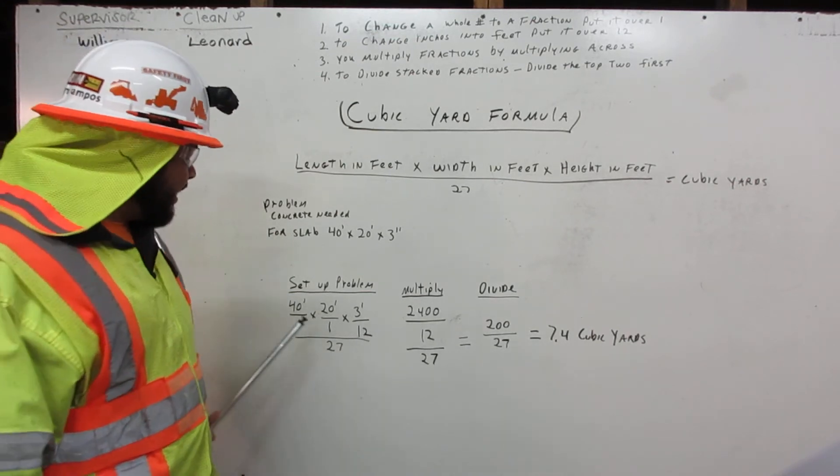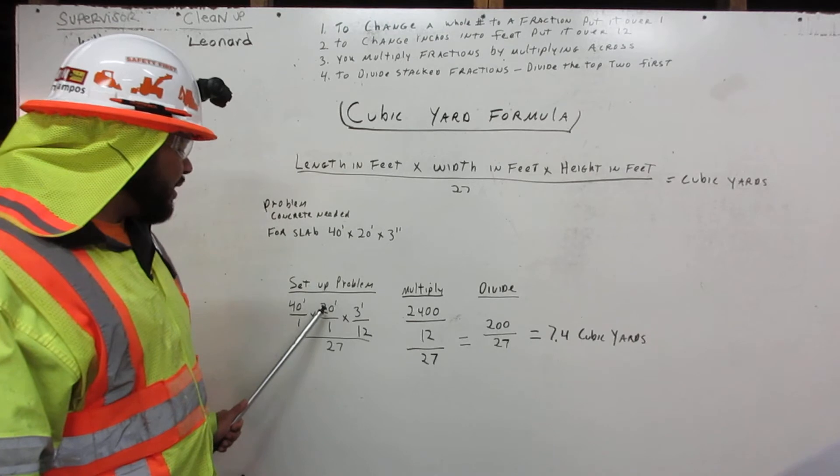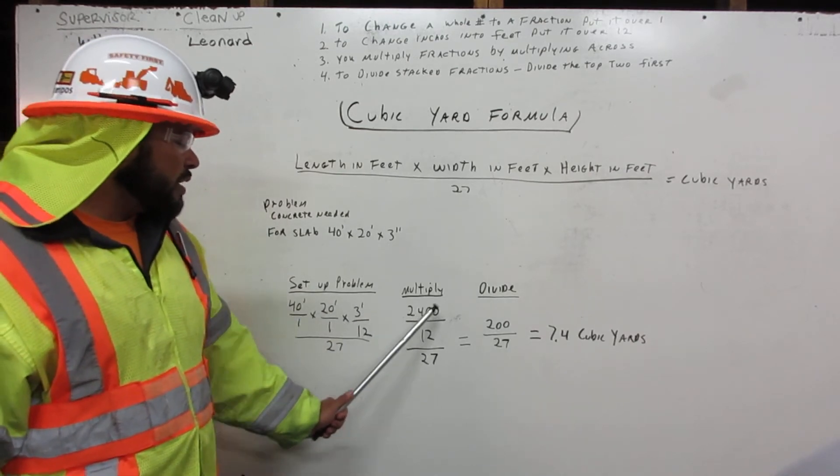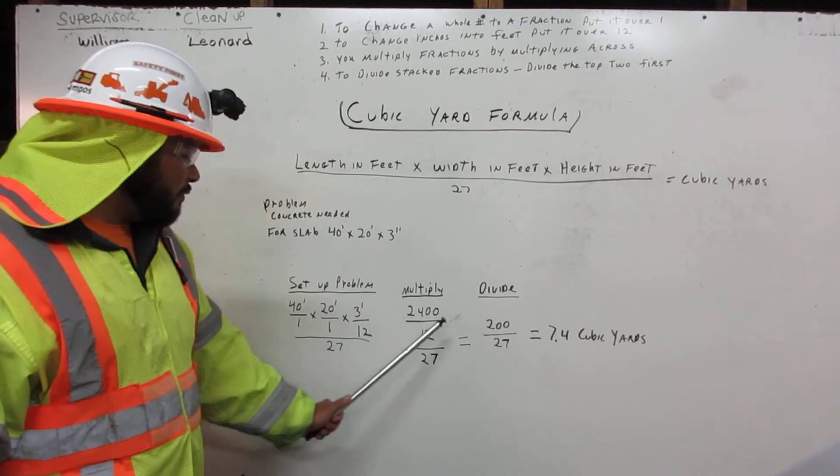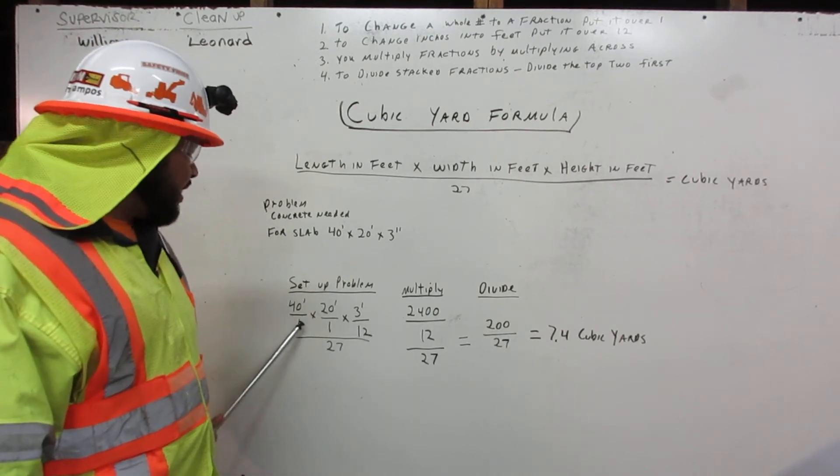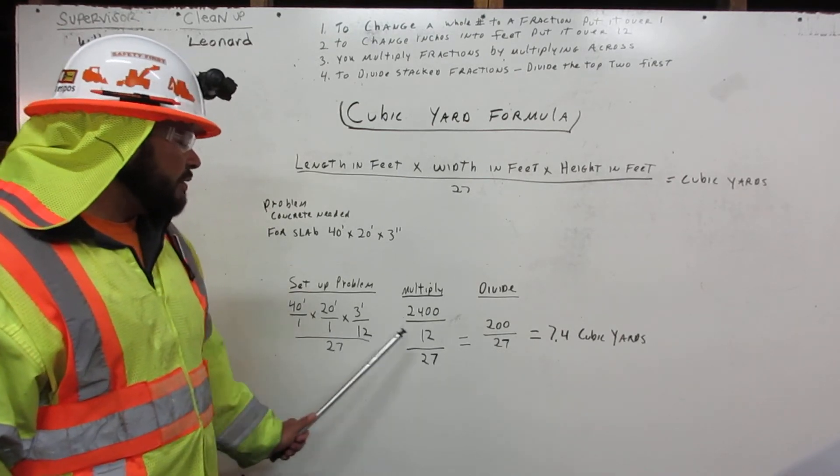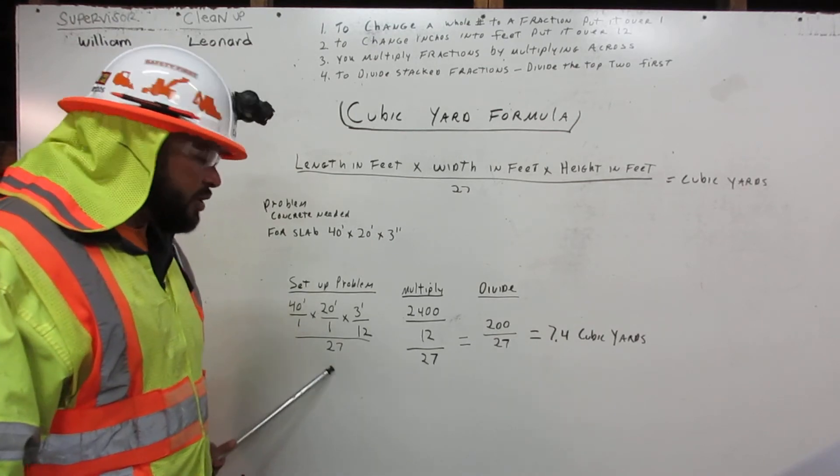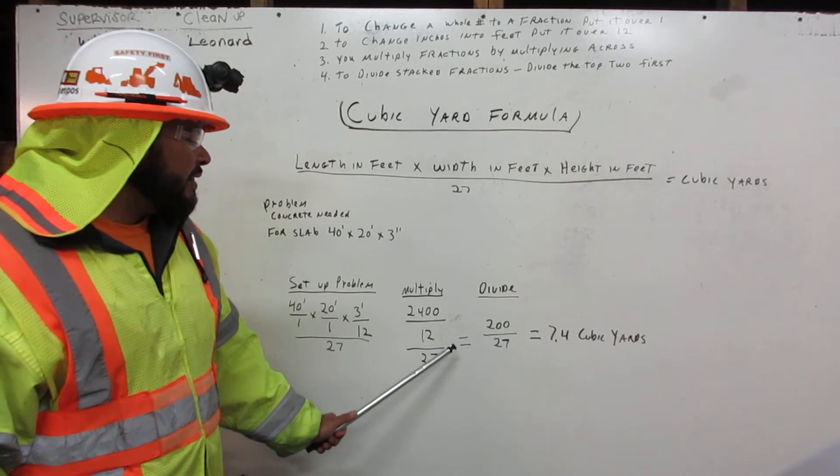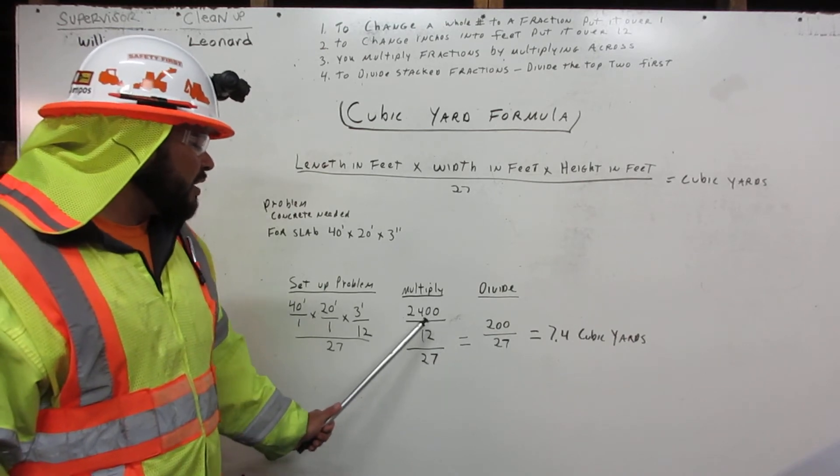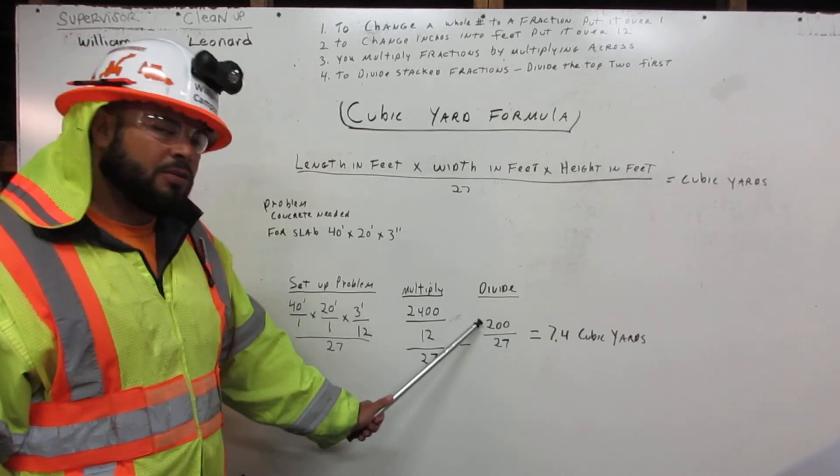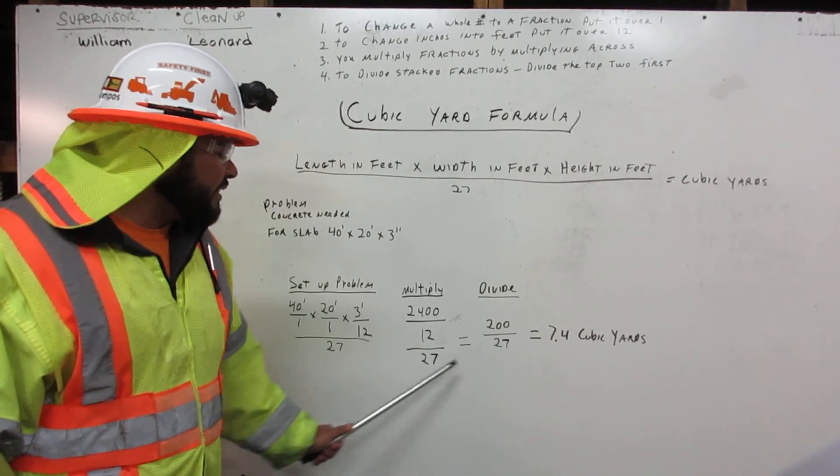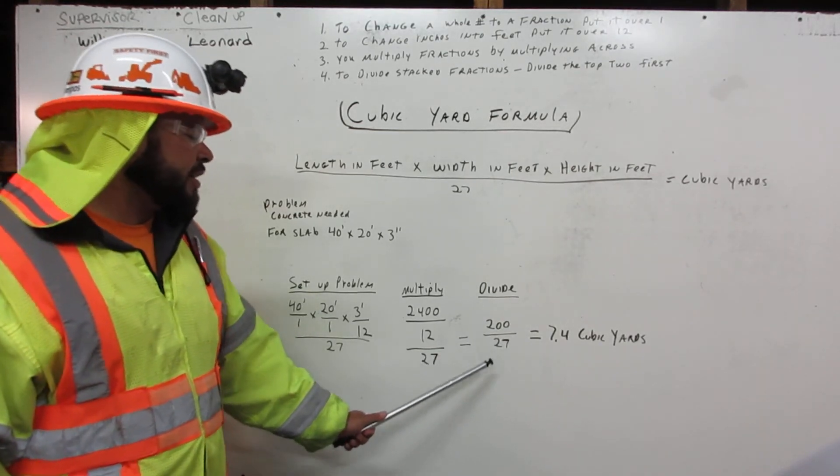Now we multiply: 40 feet times 20 feet times 3 feet equals 2,400. Over 1 times 1 times 12 equals 12, over 27. We carry the 27, which gives us 2,400 divided by 12 equals 200 over 27.